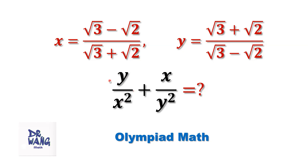First of all, we want to rationalize the denominator of x and the denominator of y. Both denominators are irrational numbers. To rationalize the denominator, for example for x, multiply both numerator and denominator by the conjugate of the denominator.